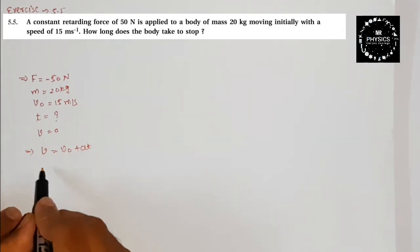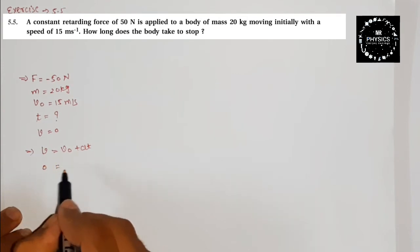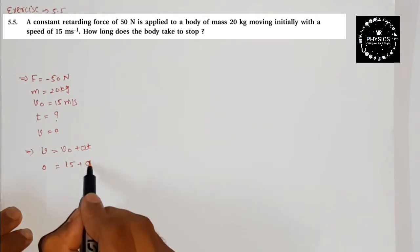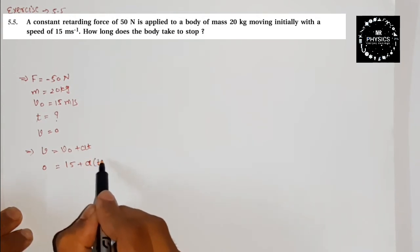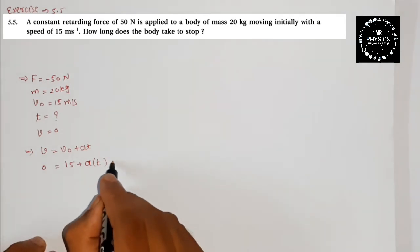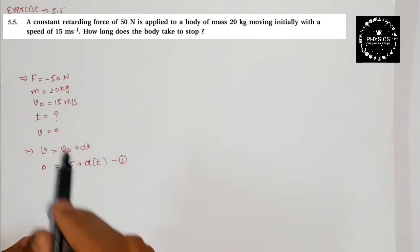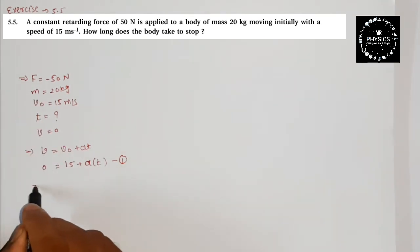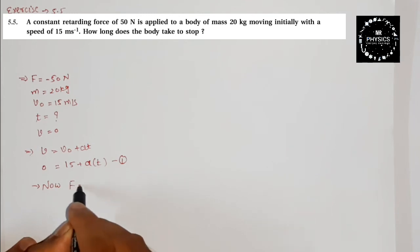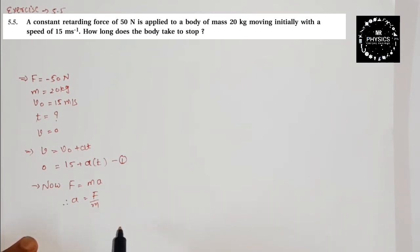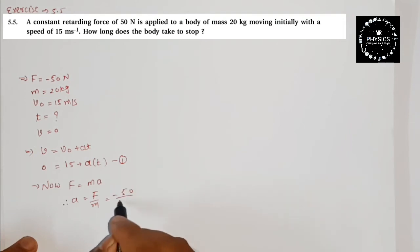Here v₀ is 15 m/s and v (final) is zero. We need acceleration first. Using F equals ma, acceleration a equals F divided by m, which is minus 50 divided by 20, giving a equals minus 2.5 meters per second squared.